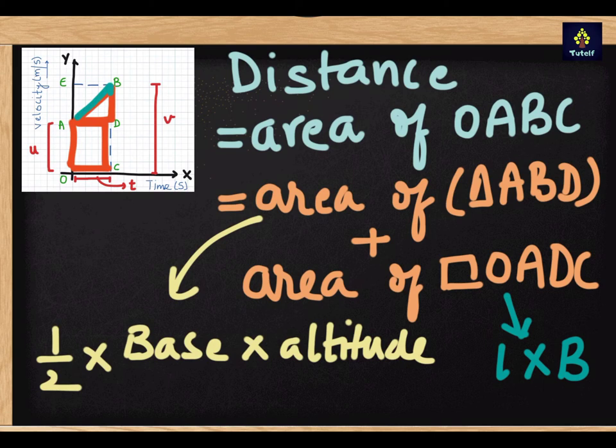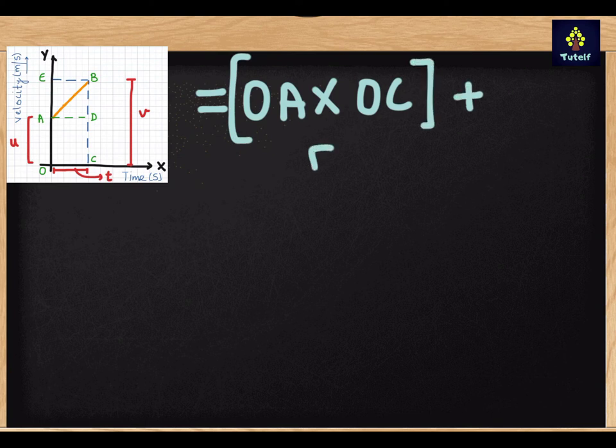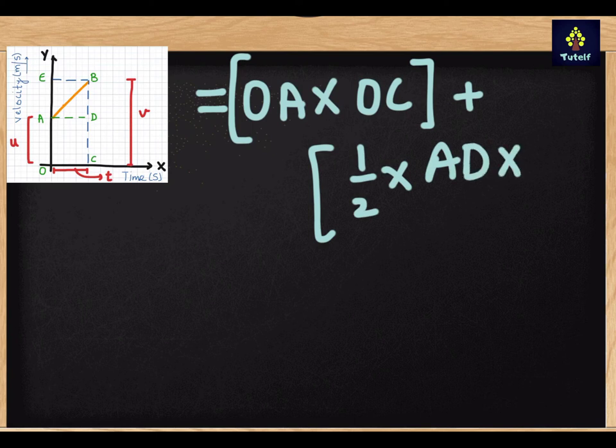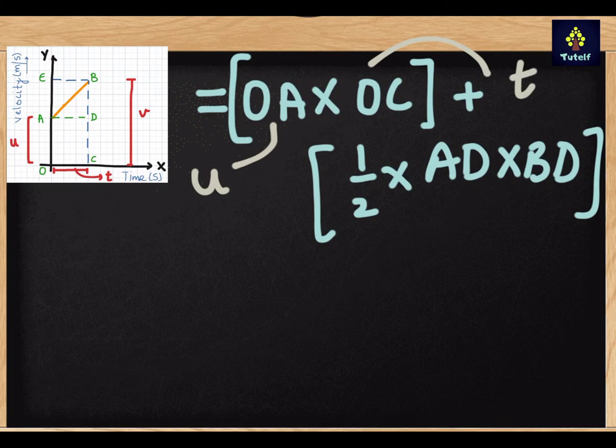Area of the triangle as we all know is half times base times altitude. For triangle ABD, we will find the area that is half times base times altitude. And for rectangle OADC, we will find length times breadth. So area will be equal to OA times OC plus half times AD times BD. Now let's put in the letters. OA is U, OC is T. AD equals OC equals time T.